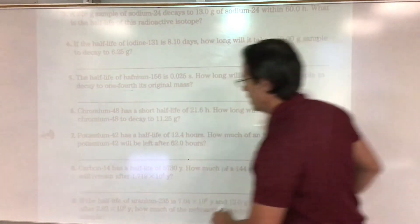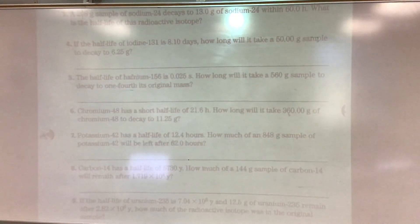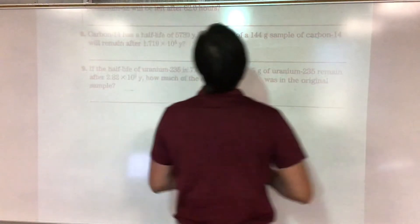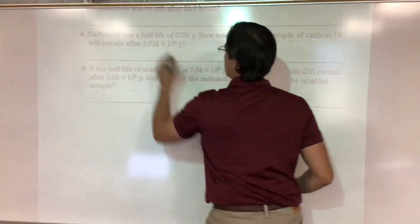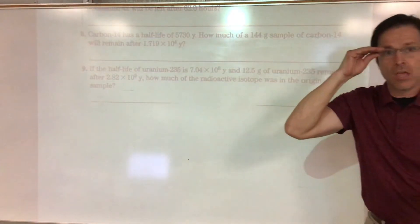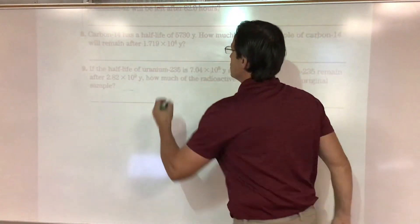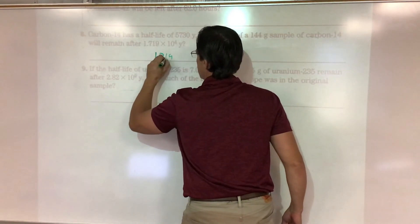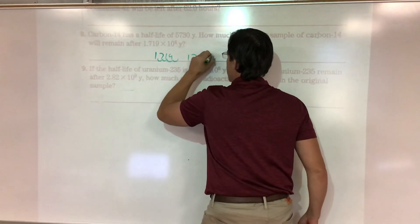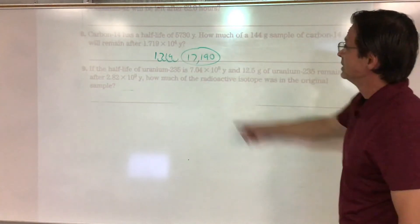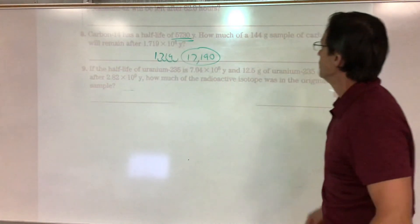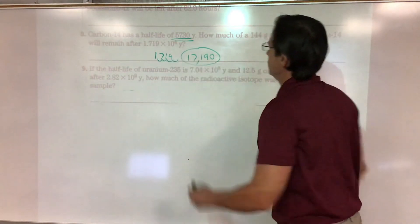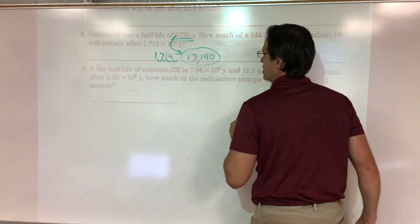For problems eight and nine, the tricky part is scientific notation. Write it out as the full number — 1.719 × 10⁴ becomes 17,190, and 4.1234 becomes 41,234. That's much easier to plug into a calculator. For number eight, here's the half-life — divide the total time into the half-life to find how many half-lives.